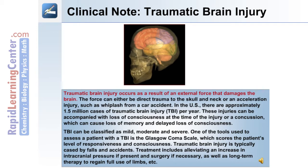In the United States, there are approximately 1.5 million cases of traumatic brain injury per year. These injuries can be accompanied by a loss of consciousness at the time of the injury or a concussion, which can cause loss of memory and delayed loss of consciousness. TBI can be classified as mild, moderate, and severe. One of the tools used to assess a patient with TBI is the Glasgow Coma Scale, which scores the patient's level of responsiveness and consciousness.